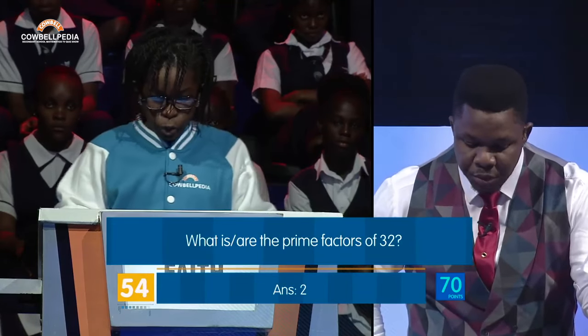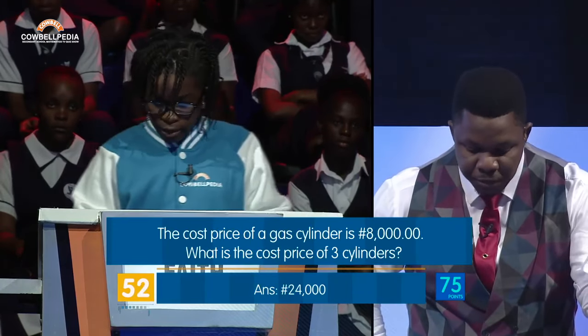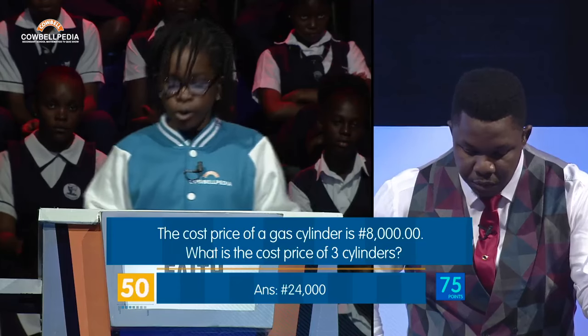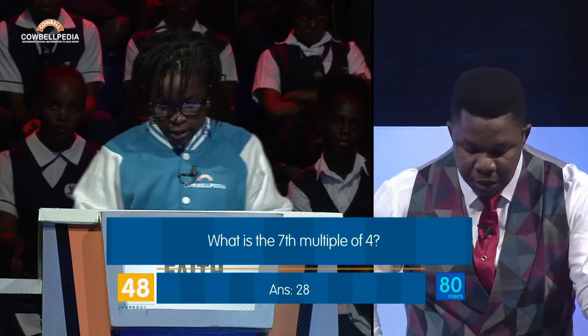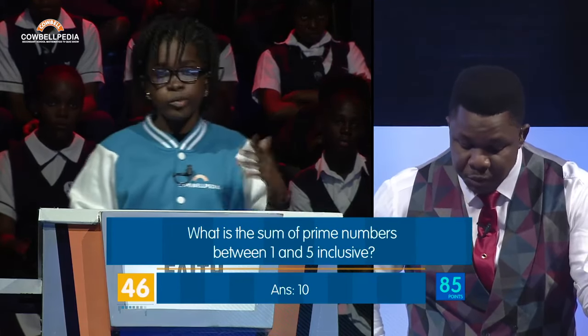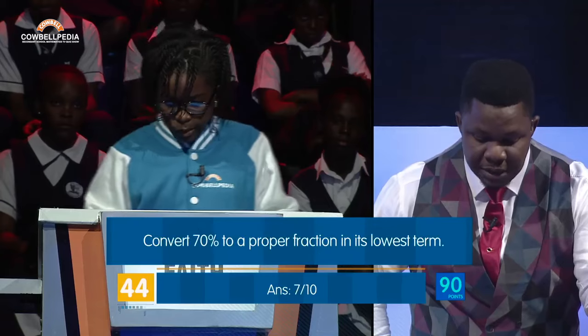What is or are the prime factors? 2. Correct. The cost price of a gas cylinder is 8,000. 24,000. Correct. What is the... 28. Correct. What is the sum of the prime numbers between 1 and 5? Correct.